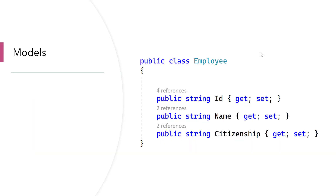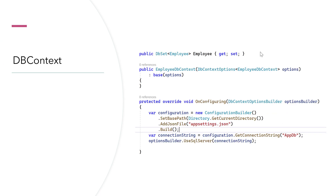Once the packages are installed, we are going to use our existing Employee model — the ID, name, and citizenship — and then we are going to create the DbContext. This is the usual Entity Framework stuff. If you have a good understanding of Entity Framework, you'll be very familiar with this code. I won't go deep into Entity Framework itself, but I'll show you how it works.